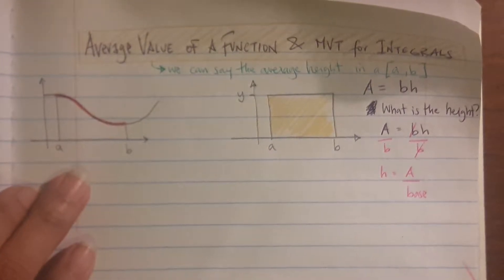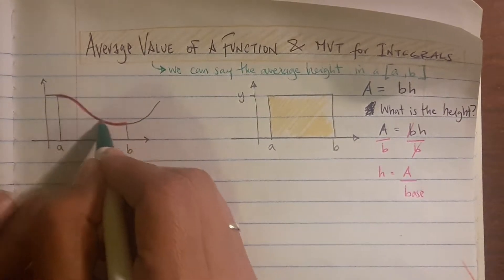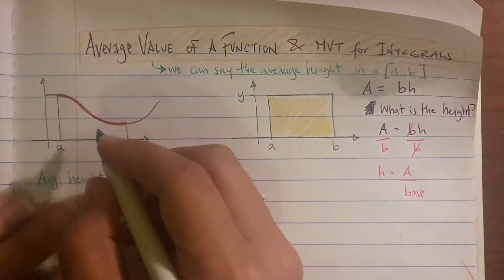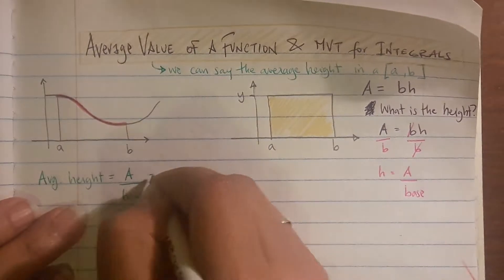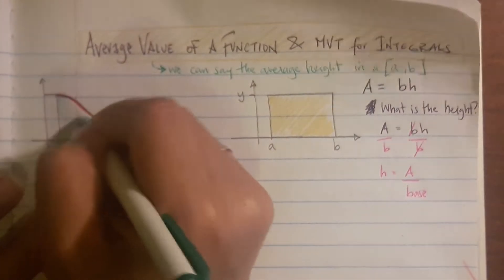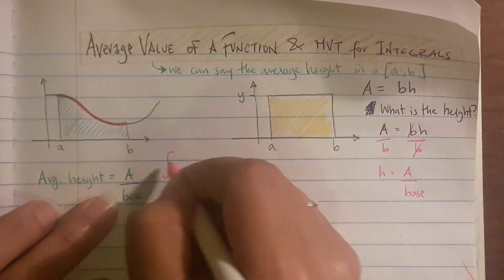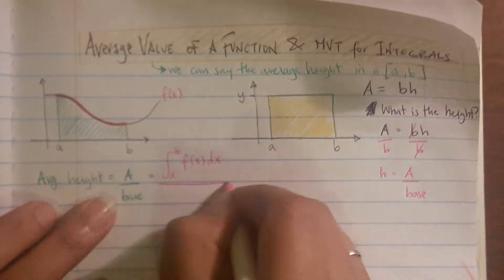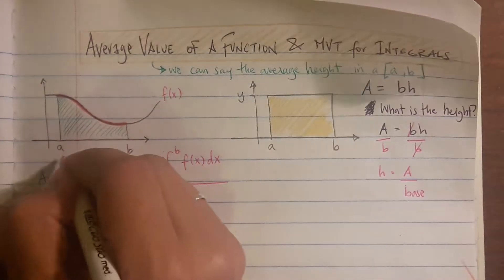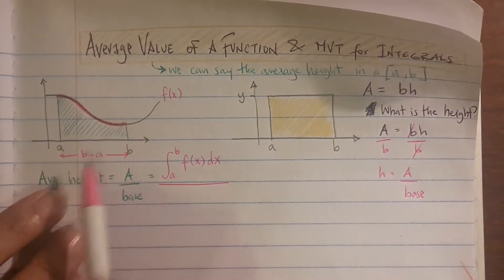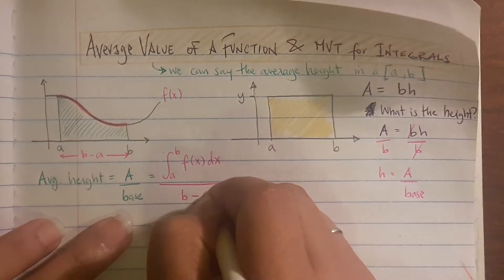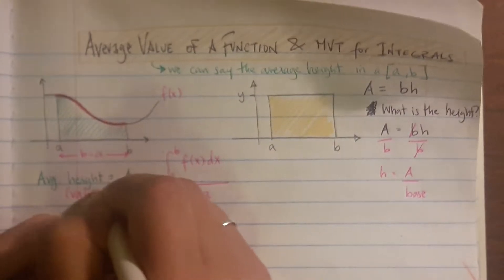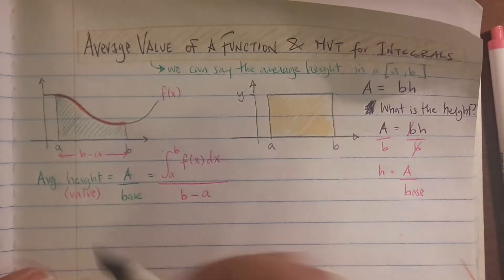The average height or average value of the function is area divided by base. I'll show you in a second that we can turn any curve into a rectangle. The area underneath the curve is the integral from a to b of f(x) dx, and the base is b minus a — that gives us how wide the interval is. So the formula to find the average height or average value of a function is: (1/(b−a)) times the integral from a to b of f(x) dx.